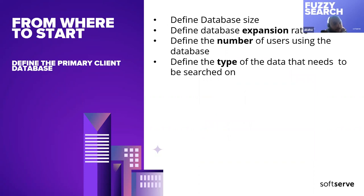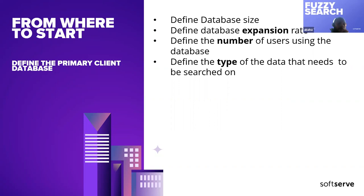Coming to the next point: defining your primary client database. In this stage, you should define your initial database size — is it thousands or millions? What's the rate of data expansion? Will thousands grow to millions in one year, two million, or ten million? This is important because you need to think about how you can scale up your model. Define the amount of users using the database — this is also very important because this is where you change your way of design.